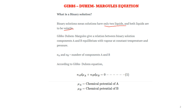The Gibbs-Duhem-Margules equation gives the relationship between components of a binary solution. Here, we take compounds A and B in equilibrium at constant temperature and pressure. The number of moles of component A and B are represented by NA and NB. According to the Gibbs-Duhem-Margules equation: NA·dμA + NB·dμB = 0.